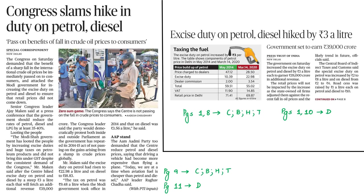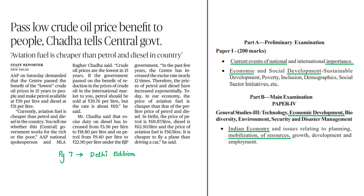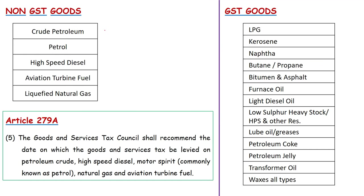The next news article discusses the increase in excise duty on petroleum products like petrol and diesel. In India, before 1st July 2017 there were multiple indirect taxes on goods and services. On 1st July 2017, the Goods and Services Tax — GST — was introduced as a single tax on goods and services. However, certain products were kept outside the ambit of GST, mainly petroleum products.